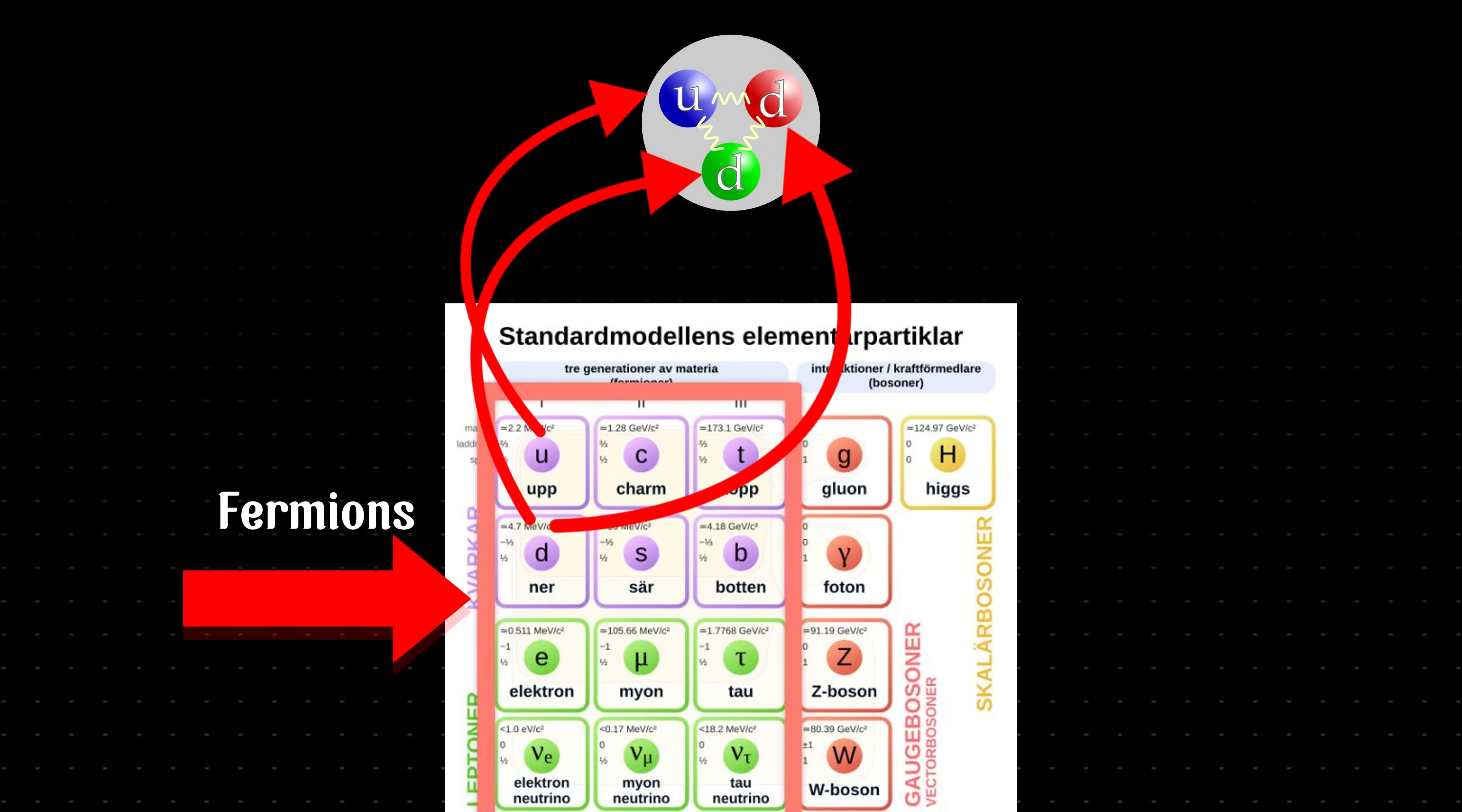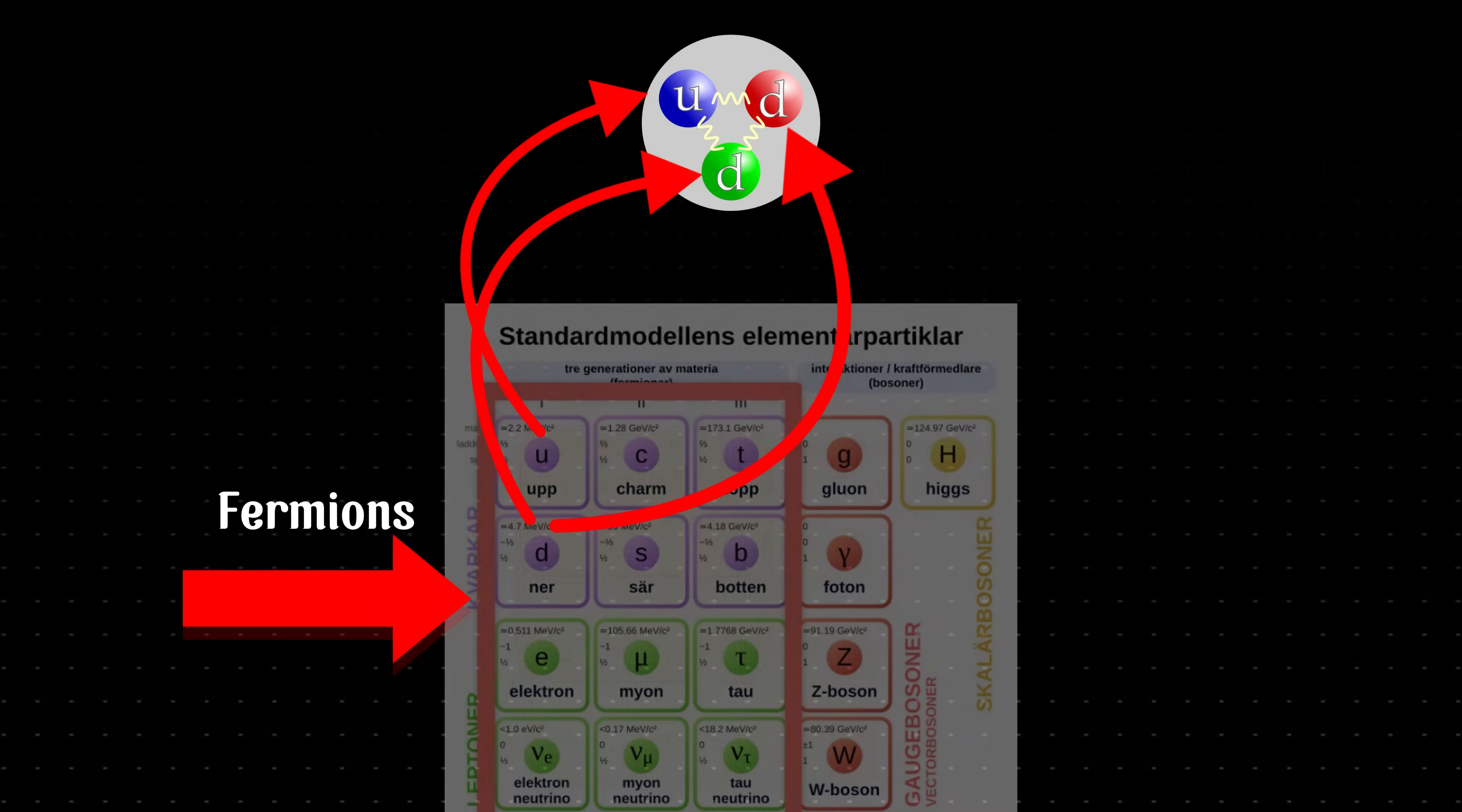In the standard model, neutrons are typical matter particles, made of fermions. In theory and practice, two neutrons can briefly bond, forming a nucleus called neutronium. But it's unstable, and one neutron decays into a proton.